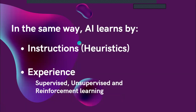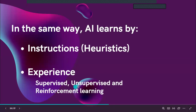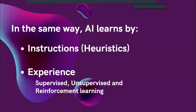AI learns the same way. In terms of instructions, AI learns through heuristics and actual commands — like a robot: when you're two meters away from a wall, turn left or right. That's heuristics — it has learned not to hit a wall head-on. And by experience, through supervised learning, unsupervised learning, and reinforcement learning — when you expose AI to certain images, it learns those images and can classify them.